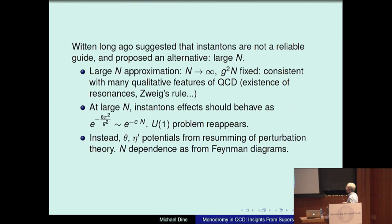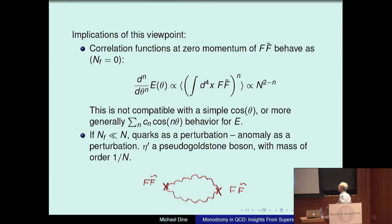Instead, what Ed suggested was that the theta and eta prime potentials should arise from resumming perturbation theory, and the N dependence of these should be as you see in Feynman diagrams. If I think about correlation functions of zero momentum of F-dual, these behave as derivatives of the vacuum energy with respect to theta, and so they should behave like N to the 2 minus N.